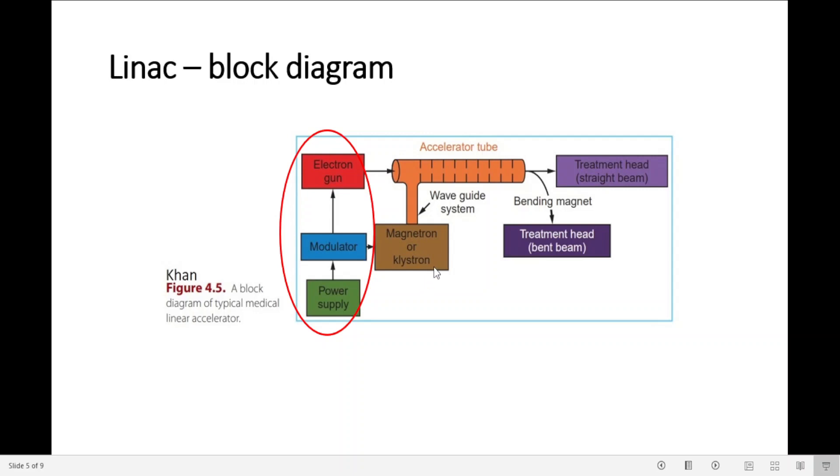And a klystron is a microwave amplifier. It's not a generator. It's only an amplifier. If the LINAC has klystron, it also needs a low power microwave generator, the RF driver. The pulsed microwaves generated in this system are injected into the accelerator tube through the waveguide system, which is this part here.